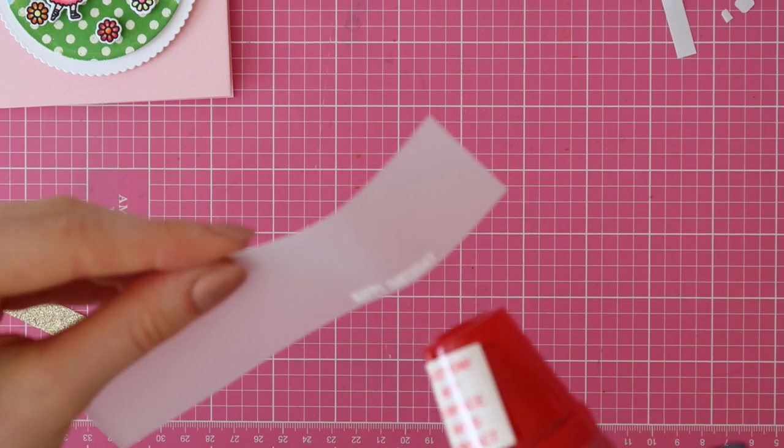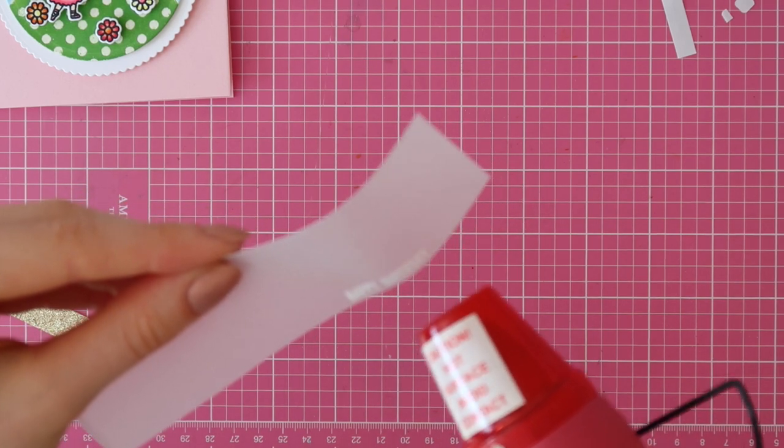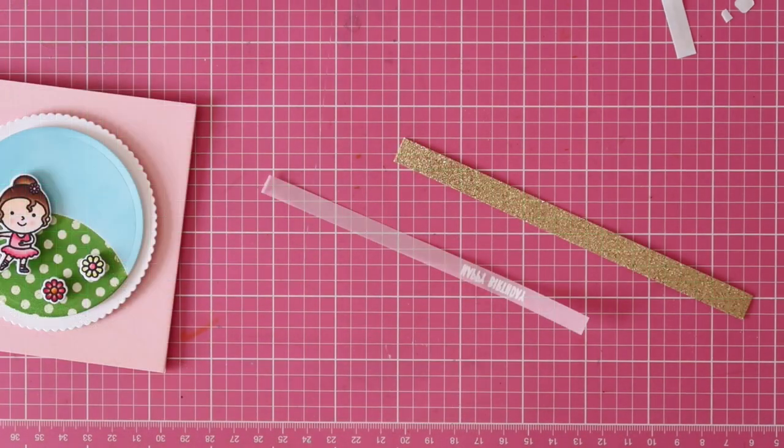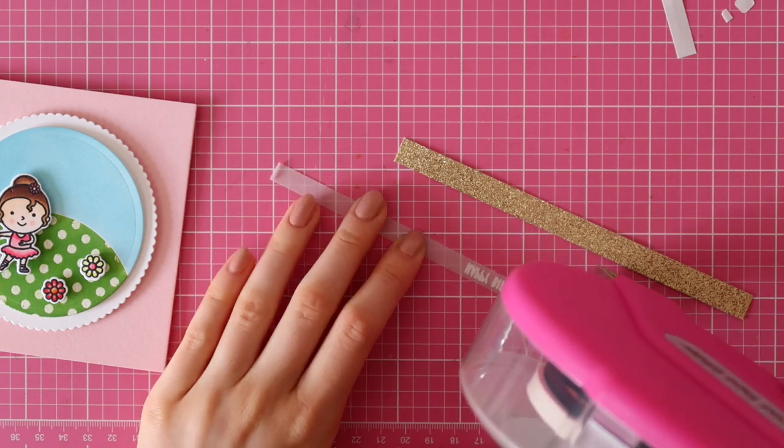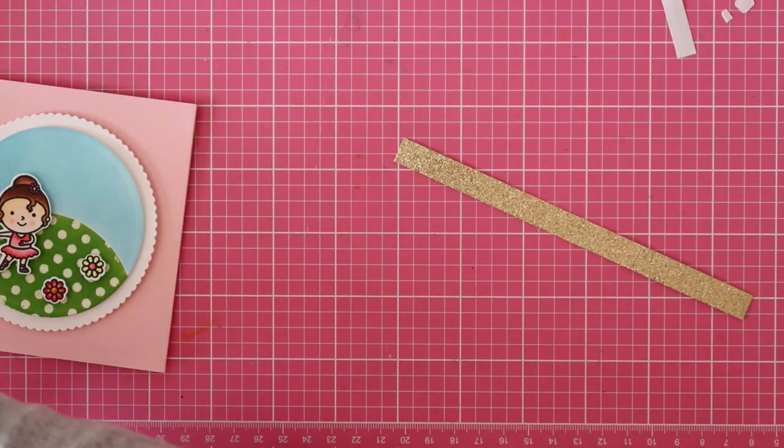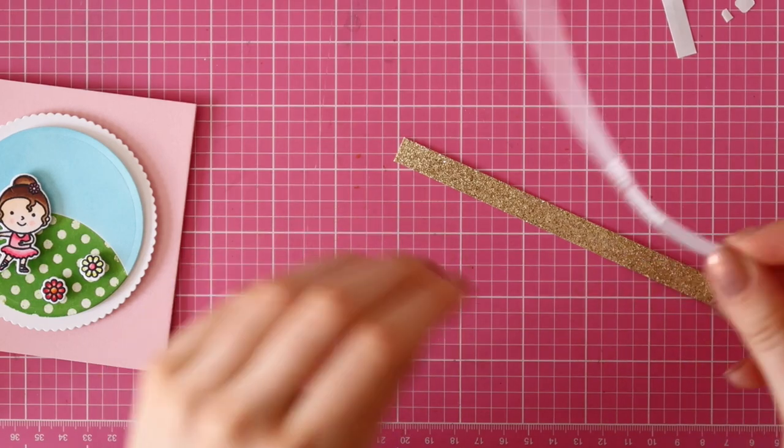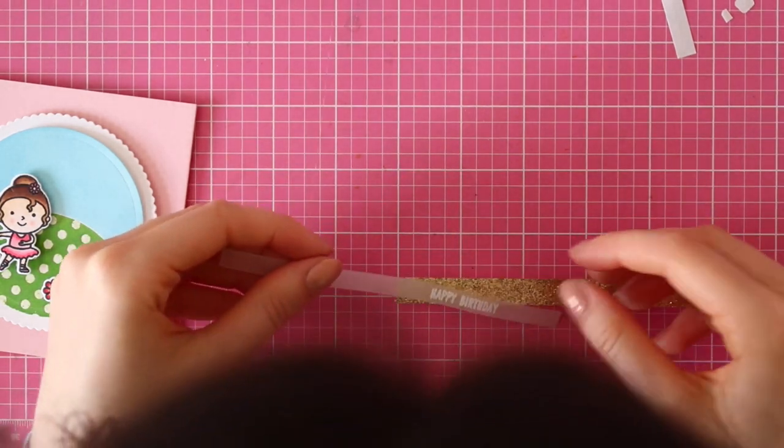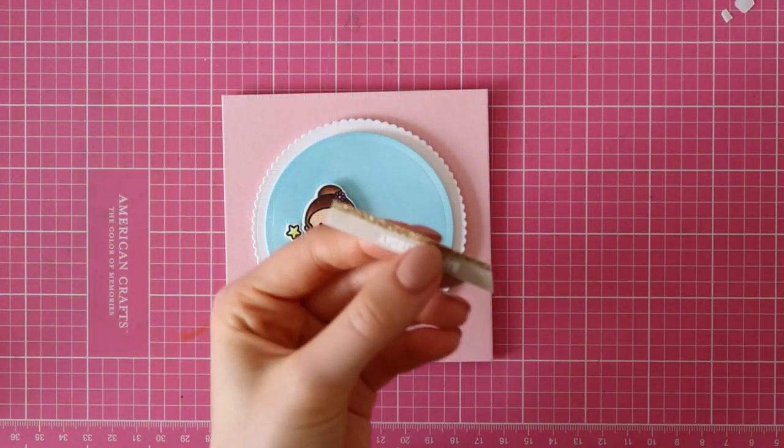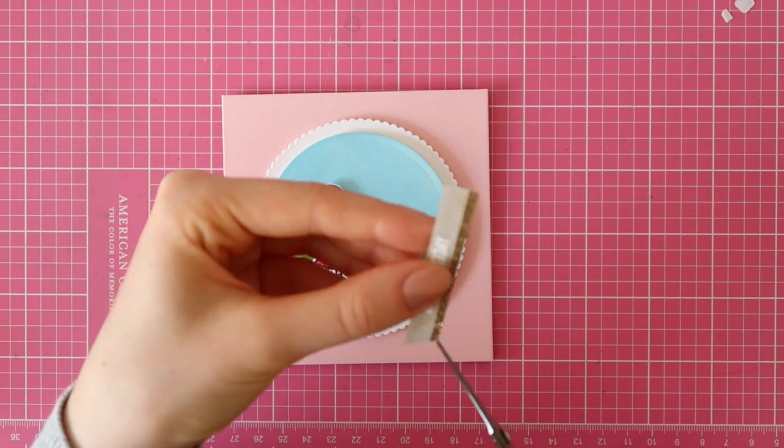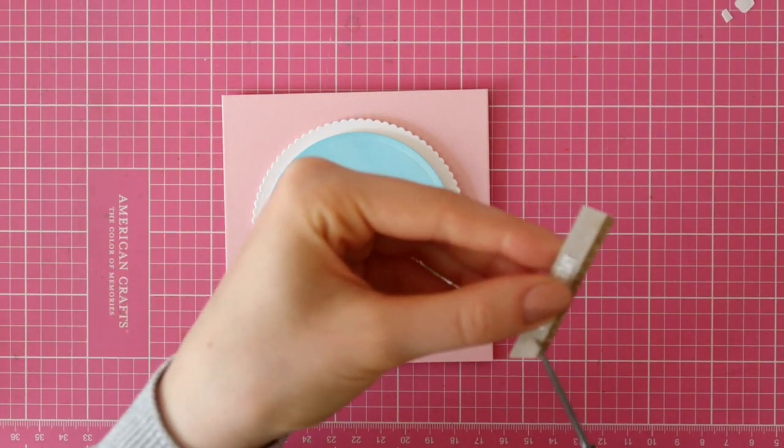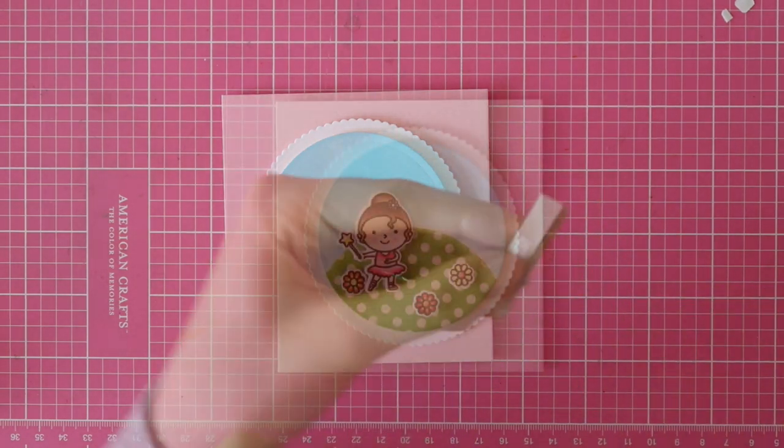I'm heat setting this embossing powder with my heat tool and then I am going to use some gold cardstock to add an extra touch of glitter to the sentiment piece. I'm using my Scotch ADG to adhere the piece of vellum to the piece of glitter cardstock. And you won't be able to see that I used that adhesive since the gold glitter cardstock is under there.